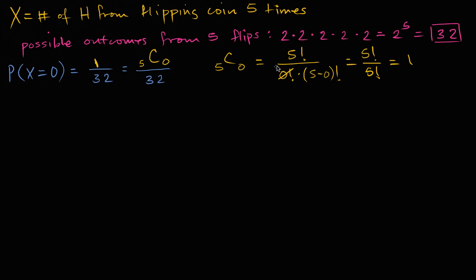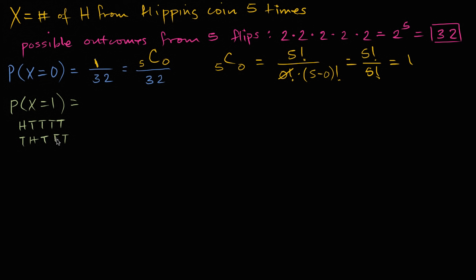Let's go on to P(X=1). The probability that X equals one: to get one head, the first flip could be heads and the rest tails, or the second flip could be heads and the rest tails, and so on. There are just five different places for that one head, so five out of the 32 equally likely outcomes involve exactly one head.